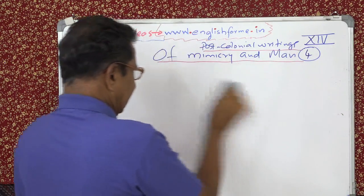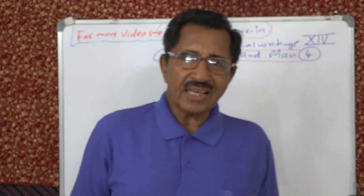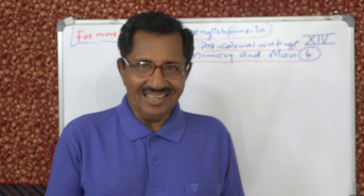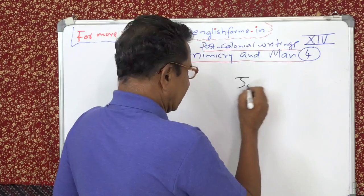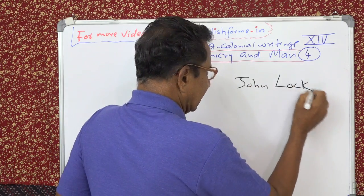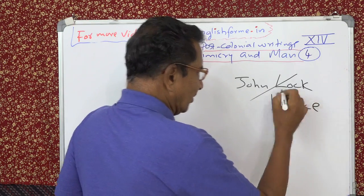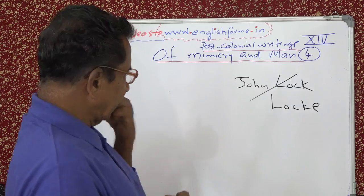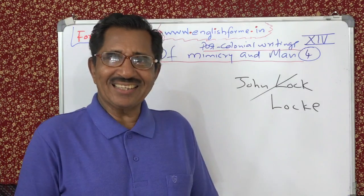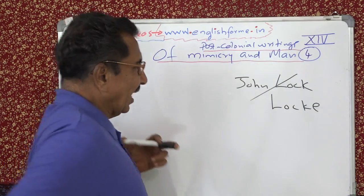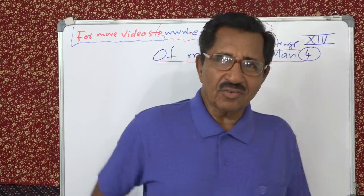I think that in one of my lectures, when I wrote Locke — John Locke — I missed the E. I'm sorry for that. I wrote it L-O-C-K. John Locke is spelled L-O-C-K-E. There is no 'Locke' like a Godrej lock. That will be a classroom error. I think it was in my second lecture also on this same topic. You will excuse me for that.